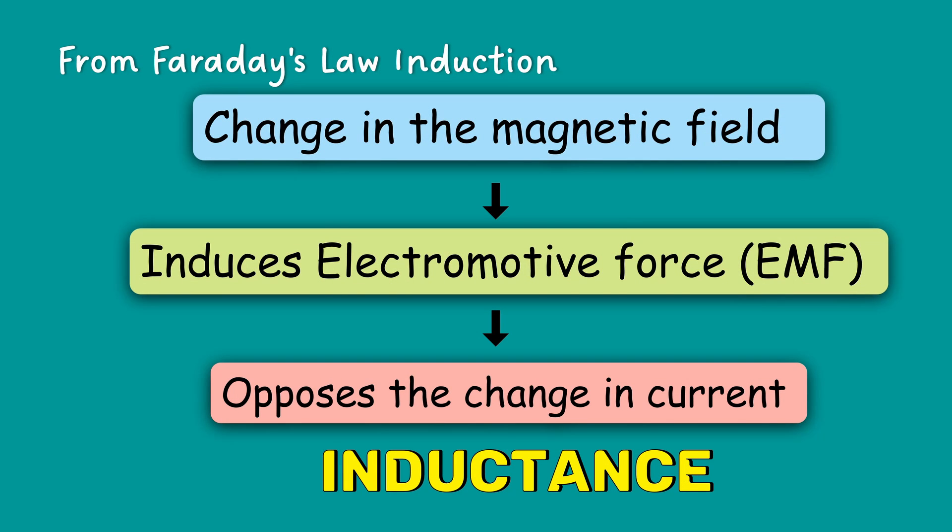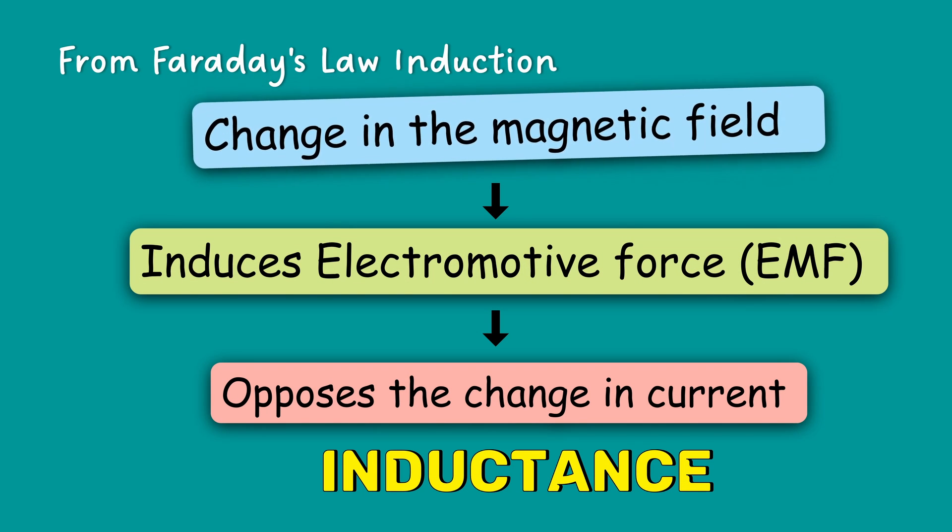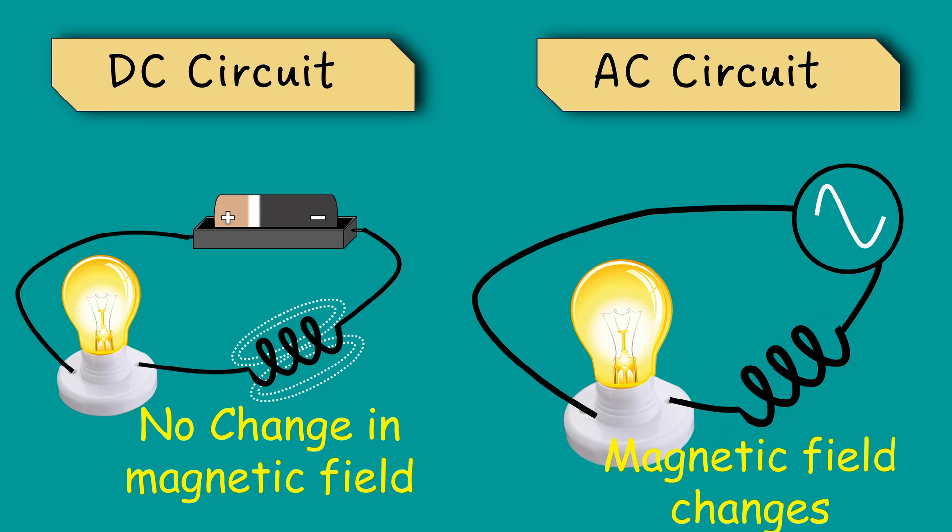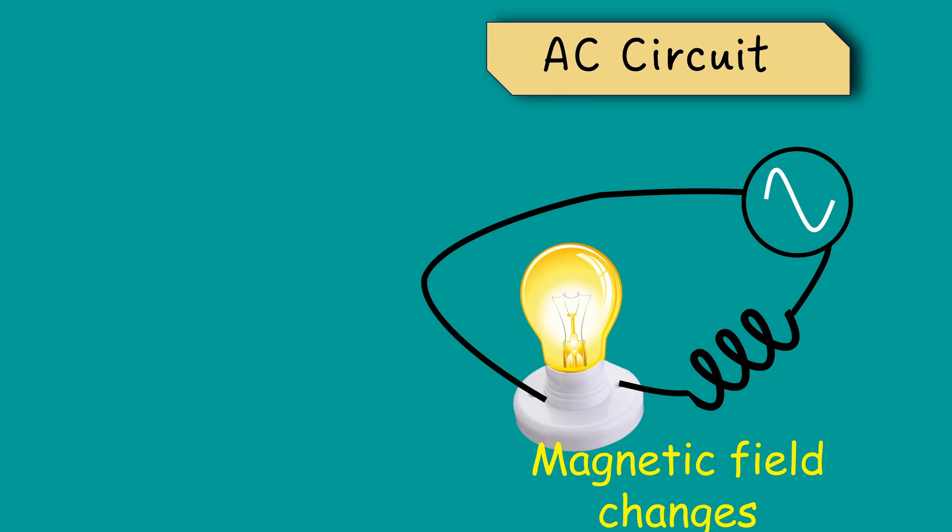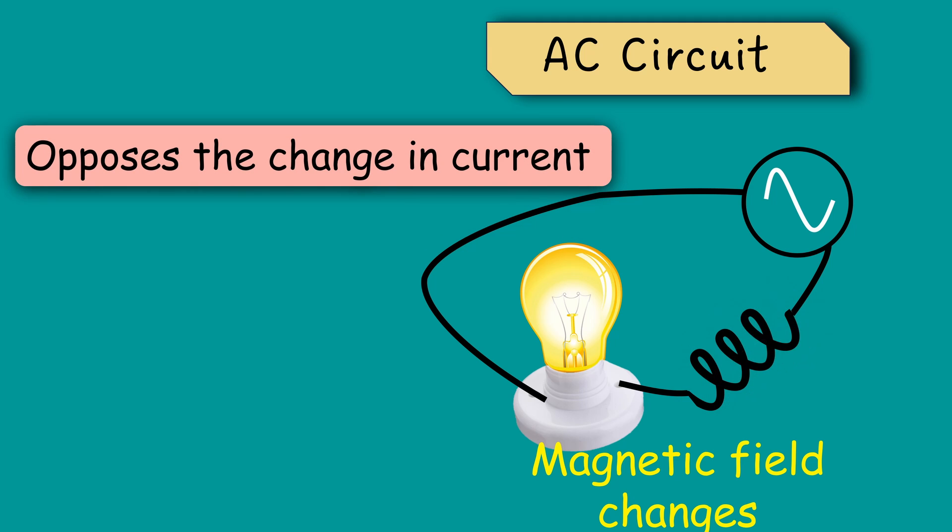The important thing is that EMF is induced only when the magnetic field changes. This means EMF is induced only in the AC circuit. The presence of the inductor does not affect a DC circuit. The inductor simply acts as a current carrying wire in this case. In AC circuit, the EMF is induced, which opposes the sudden change in current. What does it mean? I will explain this with an example.